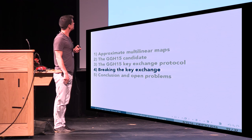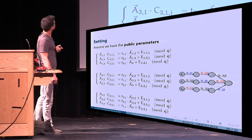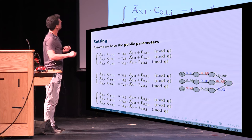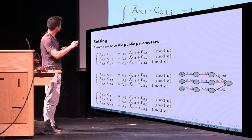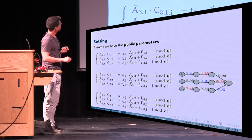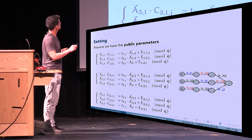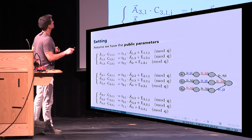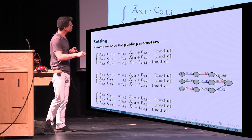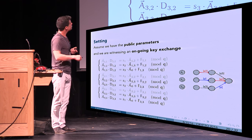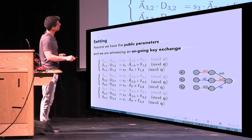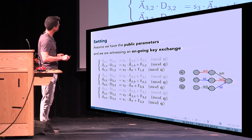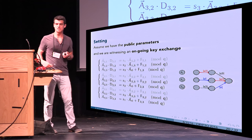Now let's try to break it. The setting: we have all the public parameters, i.e., matrices c_ij verifying that the vector times c_ij equals this secret value t_ij plus noise. We're observing an ongoing key exchange — we have all the public relations except those involving the users' secrets s1, s2, s3.